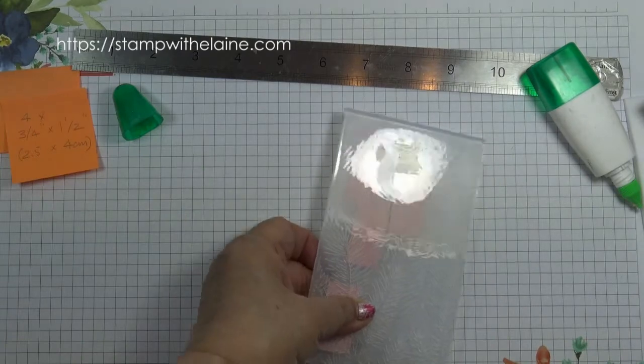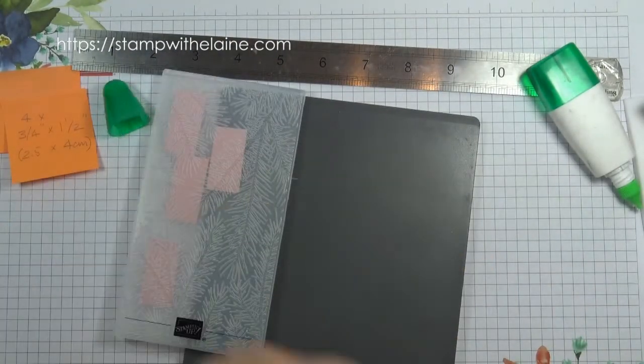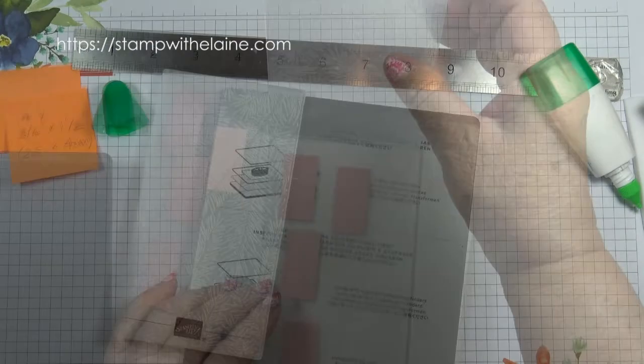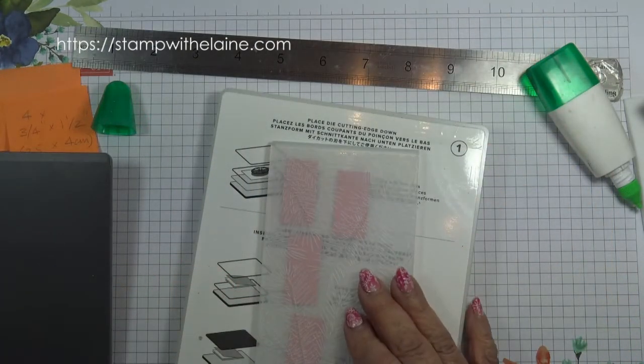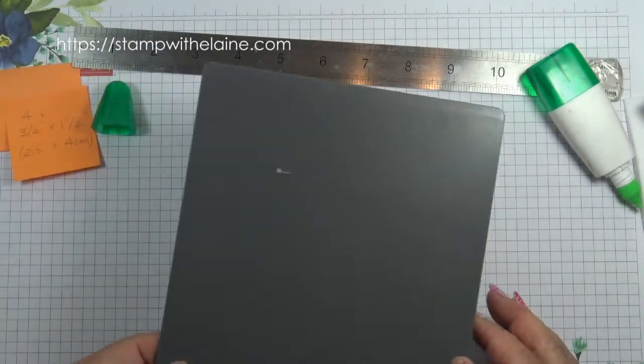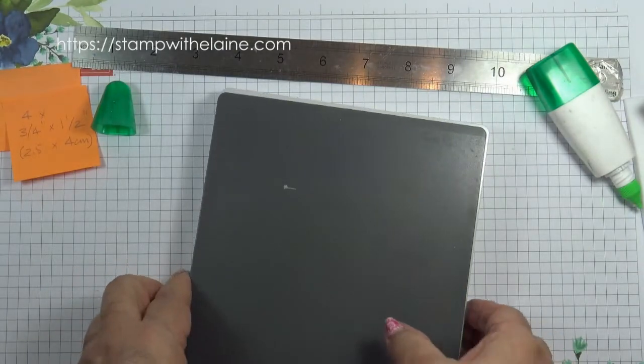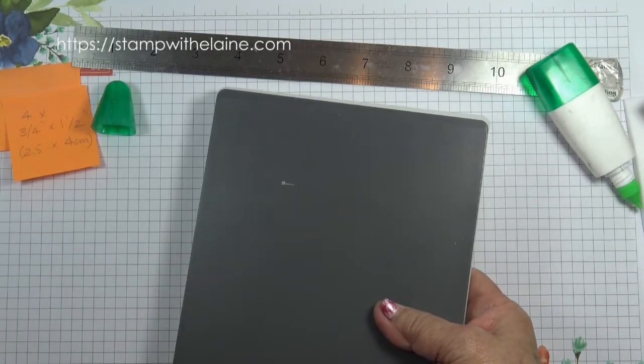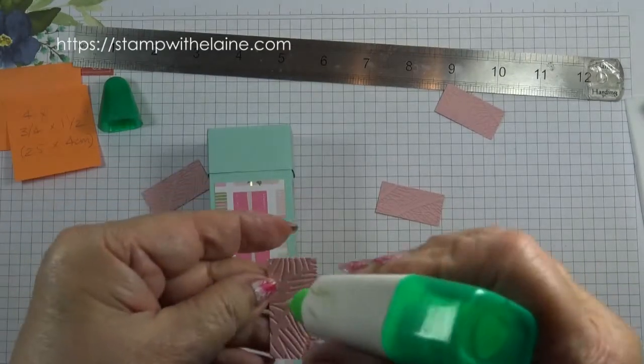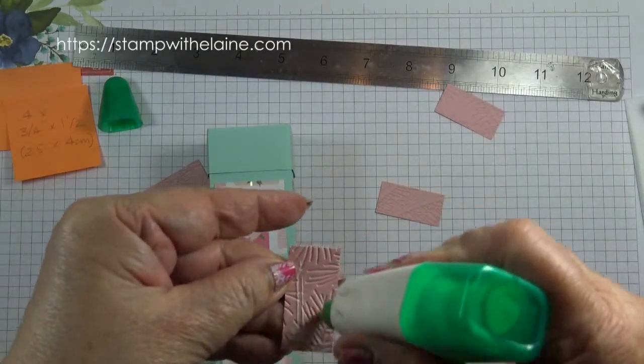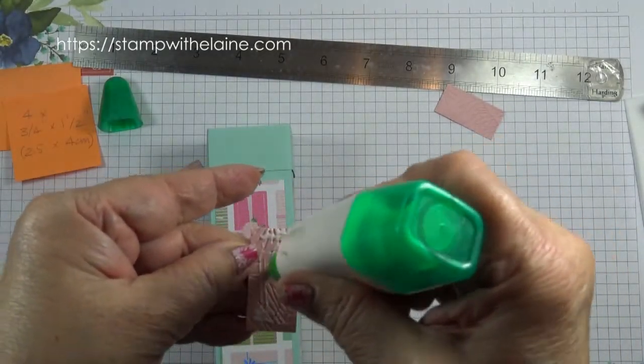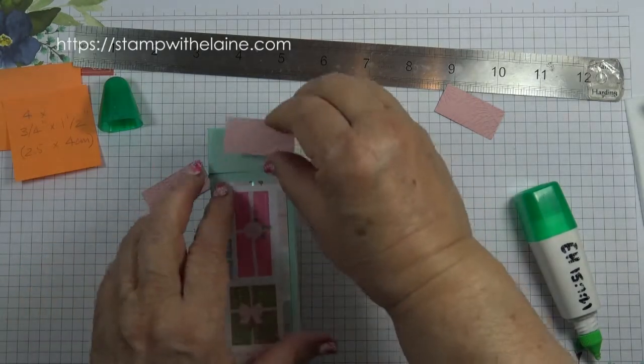Bring in my embossing folder. Then this time I just use my grey plate. Only need platform one and then the grey embossing plate. And I'll run that through the machine. Bring my box back, and I'm just going to glue these little sections on the lid here.